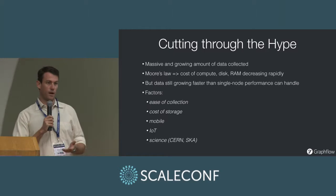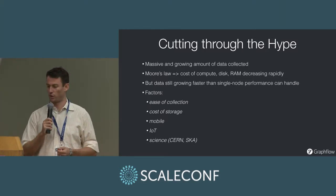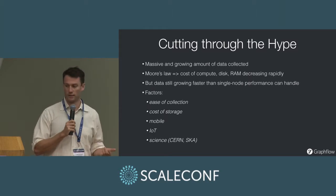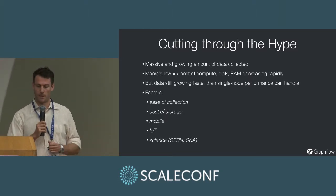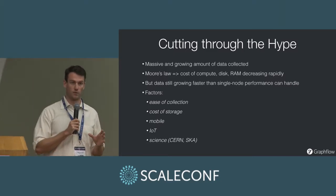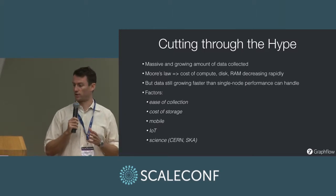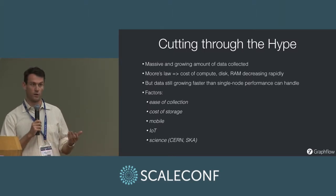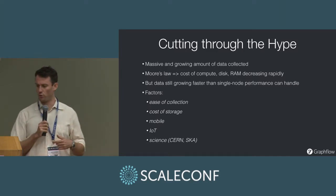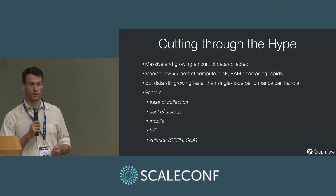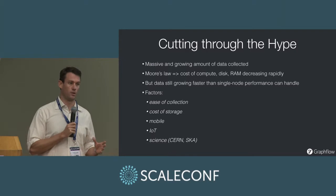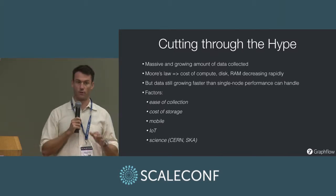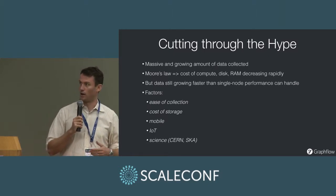There is a massive and growing amount of data being collected. It's things like web traffic, scientific measurements from CERN, the Internet of Things or connected devices. It's not that the data is appearing out of nowhere — it was always there. It's just that now we have the ability to both collect it and store it. Before we might be able to collect it, but we didn't have the capacity to store it at any reasonable cost. Now through Moore's law, the cost of compute, disk, and RAM has all dropped significantly, reaching a point where it's cheap enough to store everything.